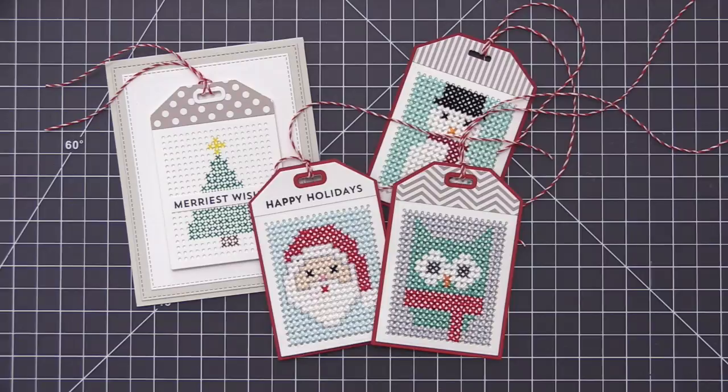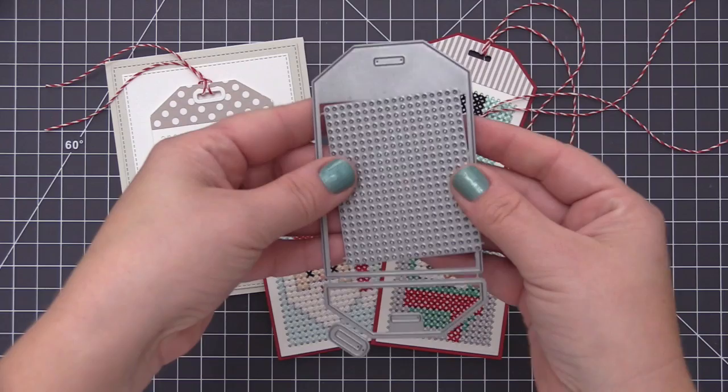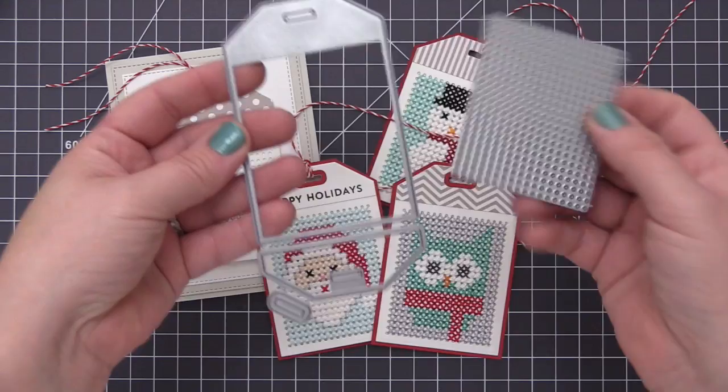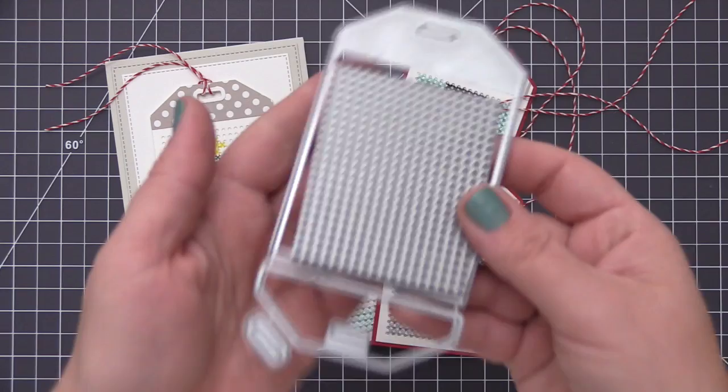The die comes with four pieces in total. When you receive your die, the little cross stitch hole detail in the center is actually attached to the tag. It's completely optional - you can either leave it intact or remove it like I've done here so you can use the tag on its own without the hole detail. It's completely customizable and you can use it however you'd like.